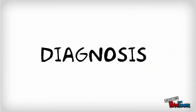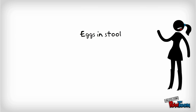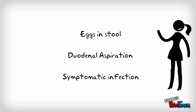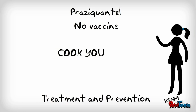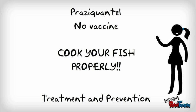Diagnosis is made by finding eggs in feces or through duodenal aspiration. For treatment and control, praziquantel is the drug of choice. Preventative measures include adequate cooking of fish and proper disposal of human waste.